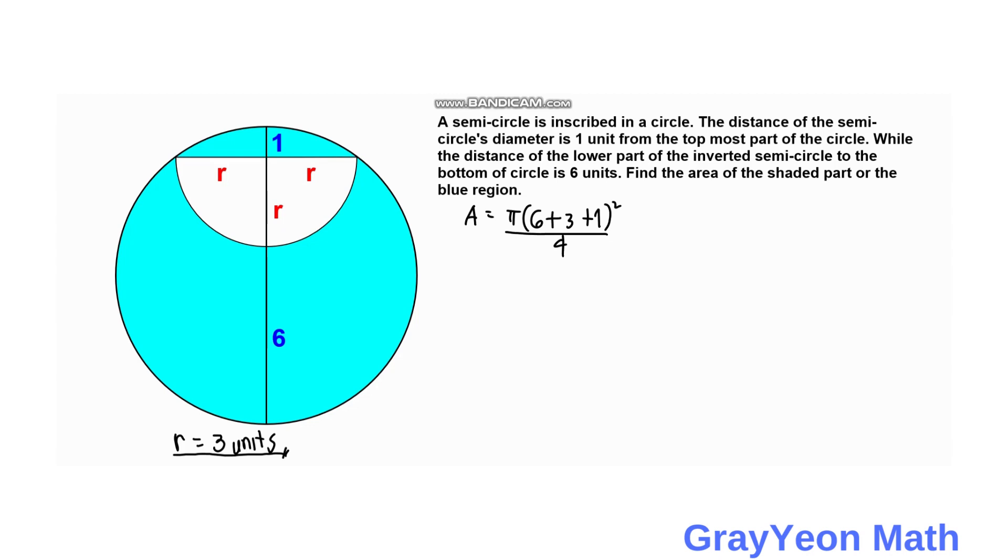And we subtract the area of the semicircle, which is pi R square over 2. And that is pi times 3 square all over 2.